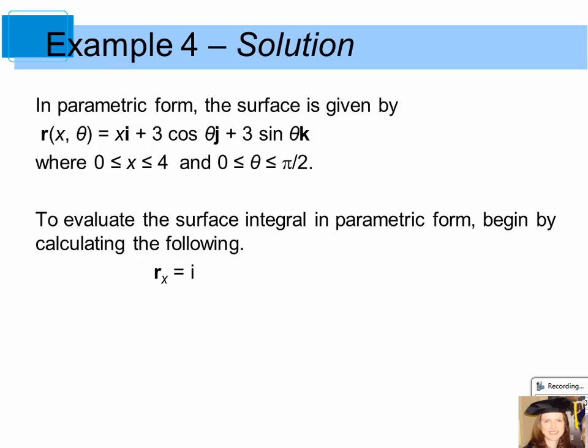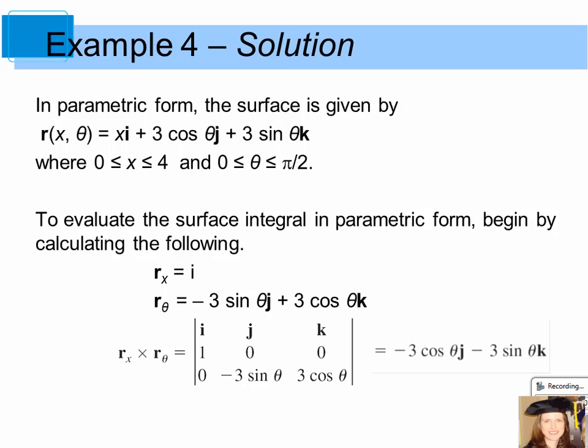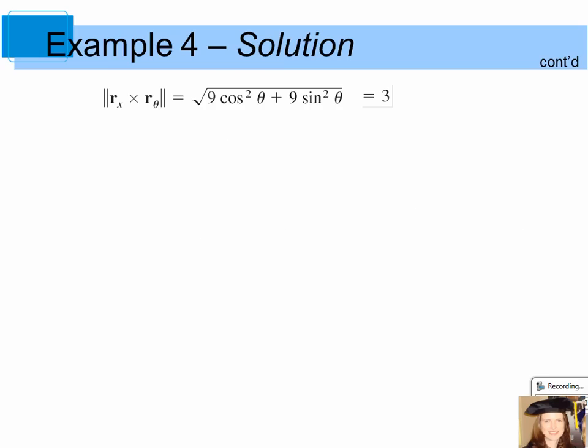So the partial derivative of r with respect to x is simply i, and the partial derivative of r with respect to theta ends up being negative 3 sine theta j plus 3 cosine theta k. You want to find the cross product of those, and you get negative 3 cosine theta j minus 3 sine theta k. Now you want to find the magnitude of this cross product, and that will simplify to 3.